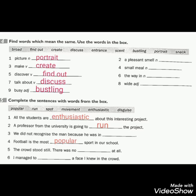Number 1: Picture — the same meaning is PORTRAIT. Number 3: Make is a verb — like CREATE. Number 5: Discover — like FIND OUT. Number 7: Talk about — like DISCUSS. Number 9: Busy — like BUSTLING, which is an adjective.